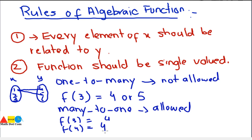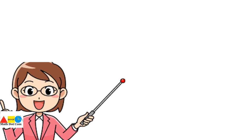Those are the two conditions required for algebraic functions, same as for ordered pairs. That's all about algebraic functions: what they are, how they are represented, how they differ from ordered pairs, and the rules that govern them. In our next lecture, we will see how to evaluate algebraic functions to get the values of x and y, or how to evaluate an algebraic function at any value of x.